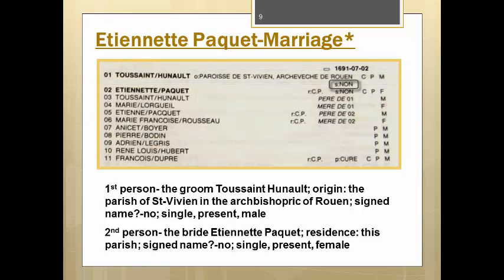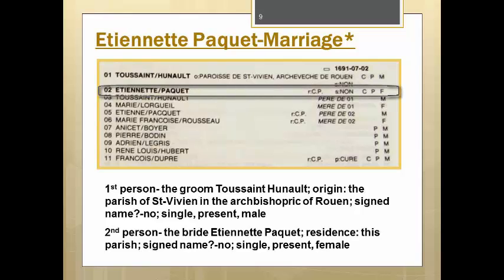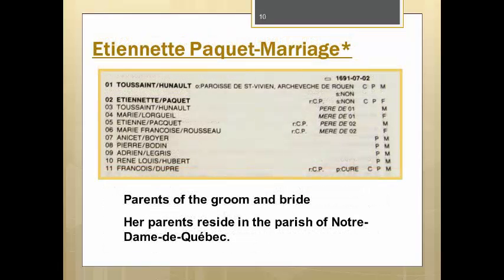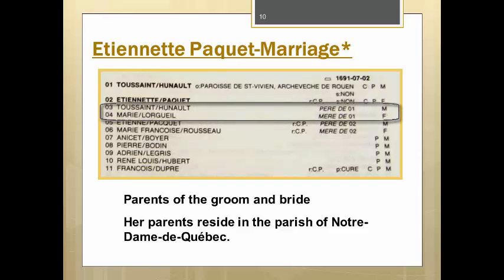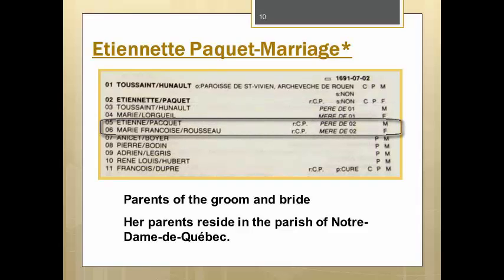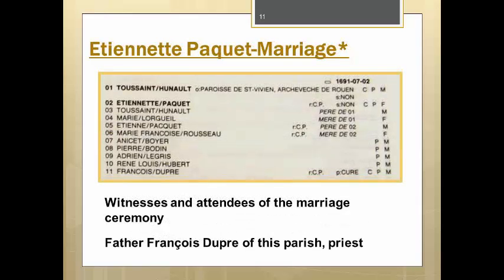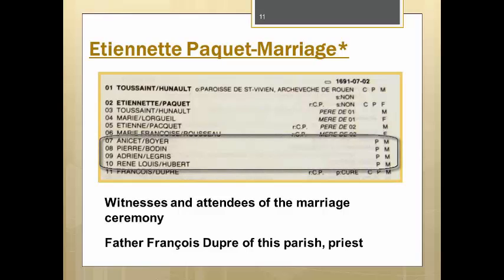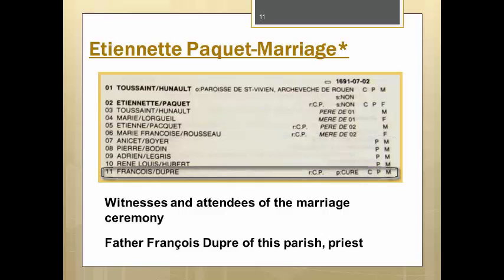The next line under the groom's information has the letter S colon with the word NON, which is French for no, telling us that the groom was not able to sign his name. Next comes the name of the bride, followed by R colon CP, which tells us her residence was cette paroisse, or of this parish — so she was from the parish of Notre Dame de Québec. She also could not sign her name. Obviously they were both single, both present, he was male, and she was female. The next four people mentioned are the parents of the groom — père (father) and mère (mother) of person number one — followed by the parents of the bride, father and mother of person number two. The bride's parents reside in this parish, the parish of Notre Dame. The next four people mentioned in this record are witnesses or attendees of the marriage ceremony, again followed by the parish priest, Father François Dupré.